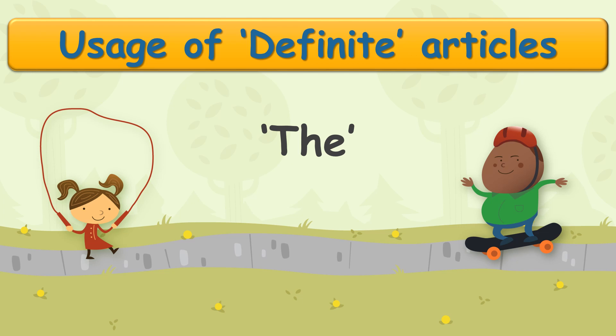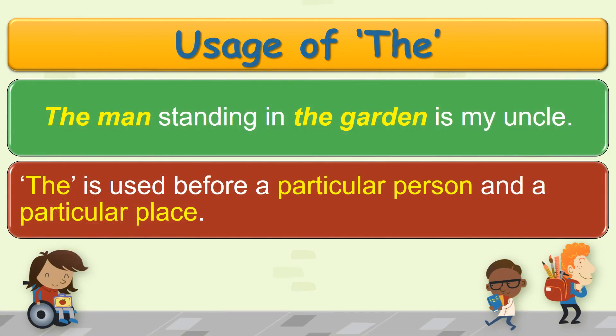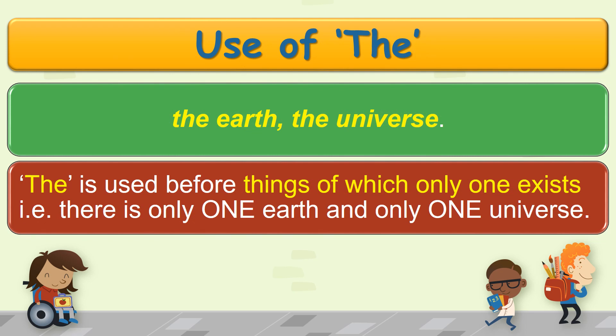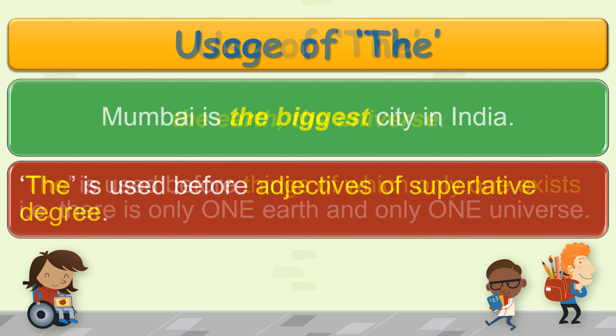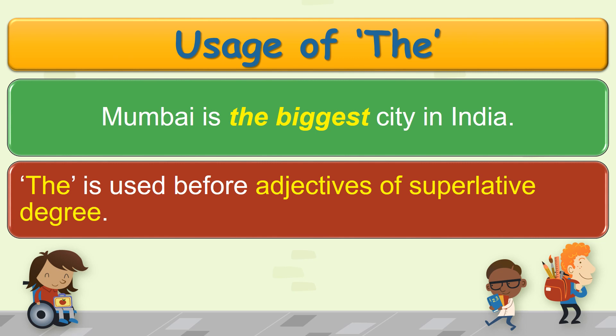Now let us know about the usage of the article THE. The man standing in the garden is my uncle. 'The' is used before a particular person — the man — and a particular place — the garden. Similarly, the earth, the universe — 'the' is used before these because they have only one existence; there is only one earth and one universe. Also, Mumbai is the biggest city in India — 'the' is used before adjectives of superlative degree; 'biggest' is the superlative of BIG.